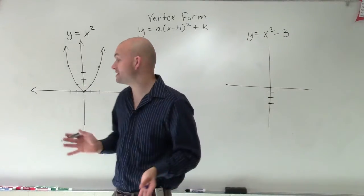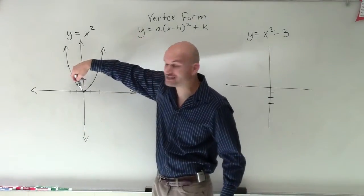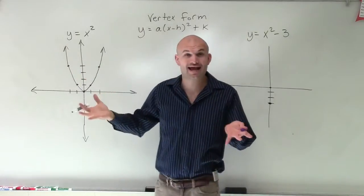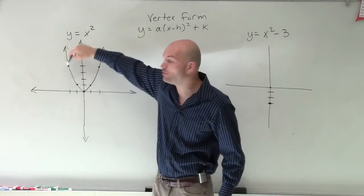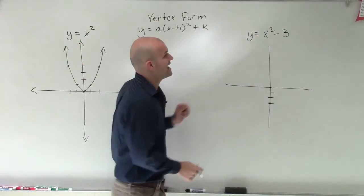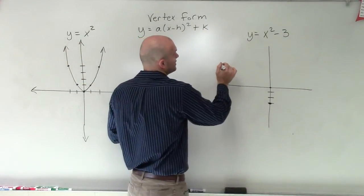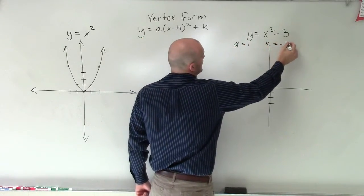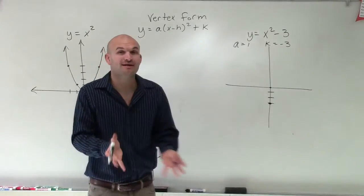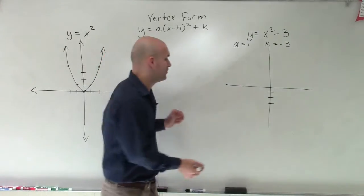It's important for us to understand the parent graph and notice the relationship of our points when our a is 1. In this case, our a is 1. And you can see I go left 1, up 1. Left 2, up 4. So since my a in this case is equal to 1, so we could say a equals 1 and k equals negative 3. Since my a equals 1, I'm going to have the same relationship for my points.